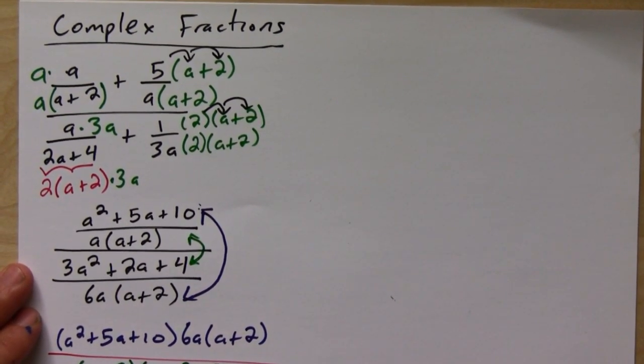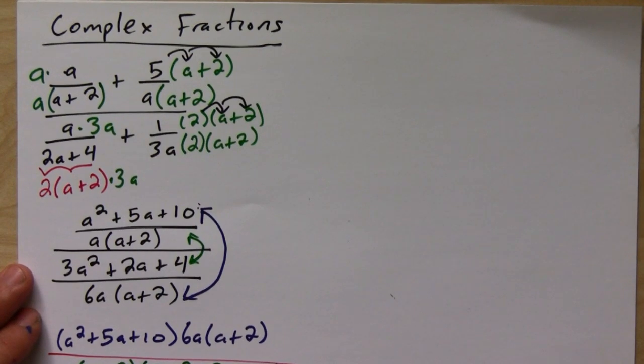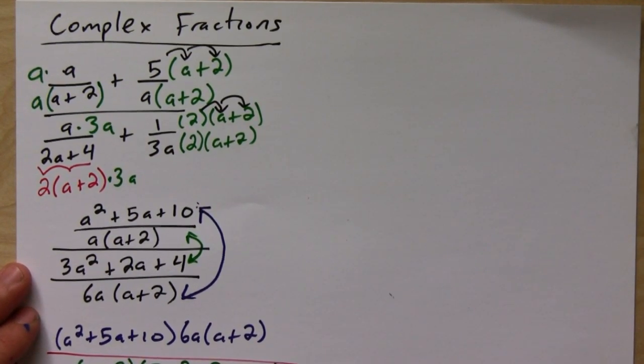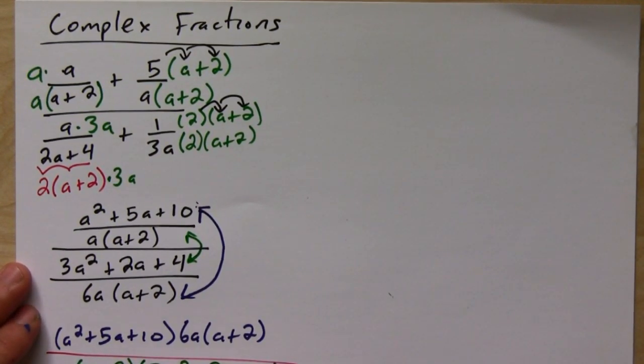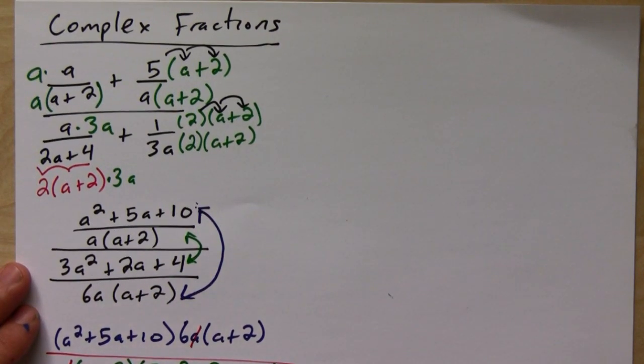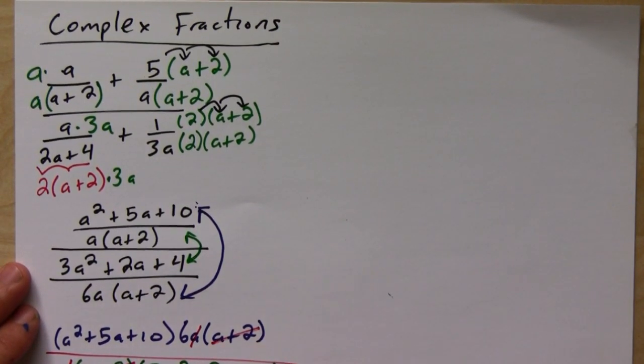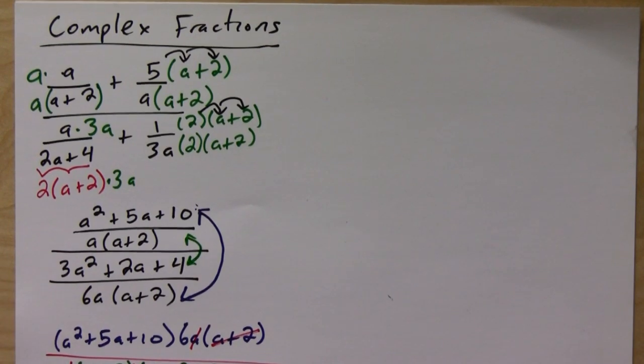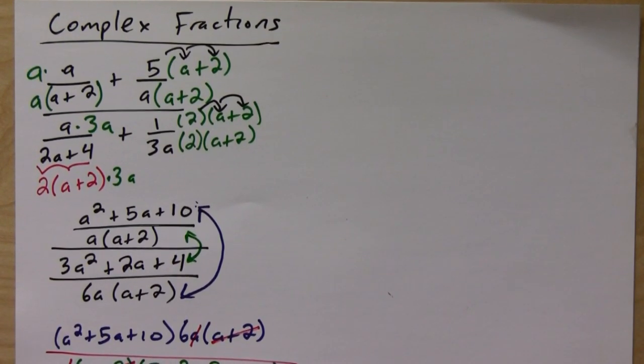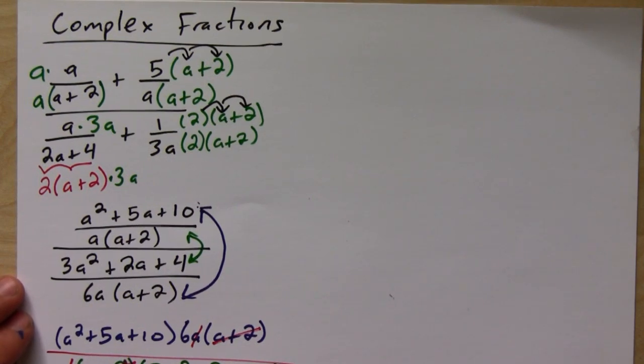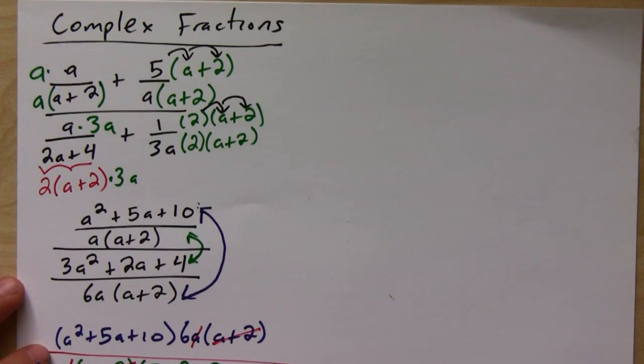And I put it all in parentheses because now you notice that you get cancellation here - the a's cancel, the (a plus 2)s cancel. And then what you do is with whatever you have left, you check to see if anything's factorable because you might be able to cancel more stuff out. And so in this case it turns out you can't, so we'll just leave it alone.